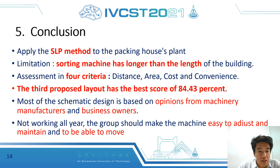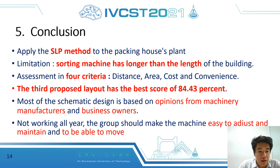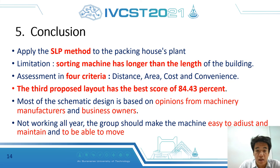In conclusion, we applied the systematic layout planning method to the packing house plan. The limitation in this case is that the sorting machine is longer than the length and width of the building. The evaluation was divided into four criteria: distance, area, cost, and convenience. The third proposed layout achieved the best score of 84.43%.